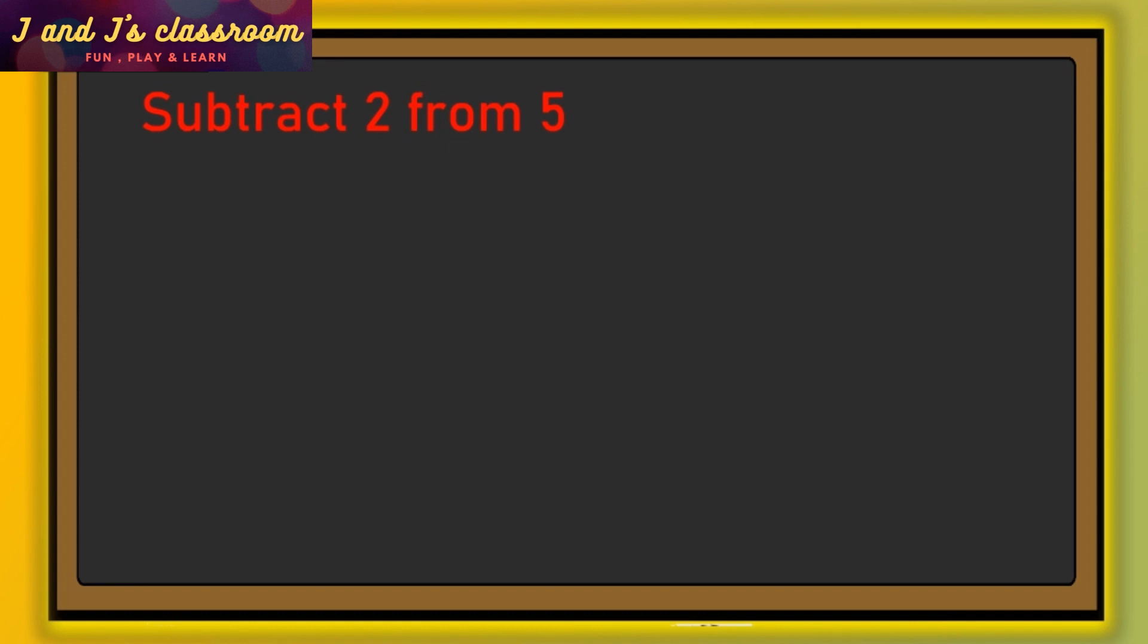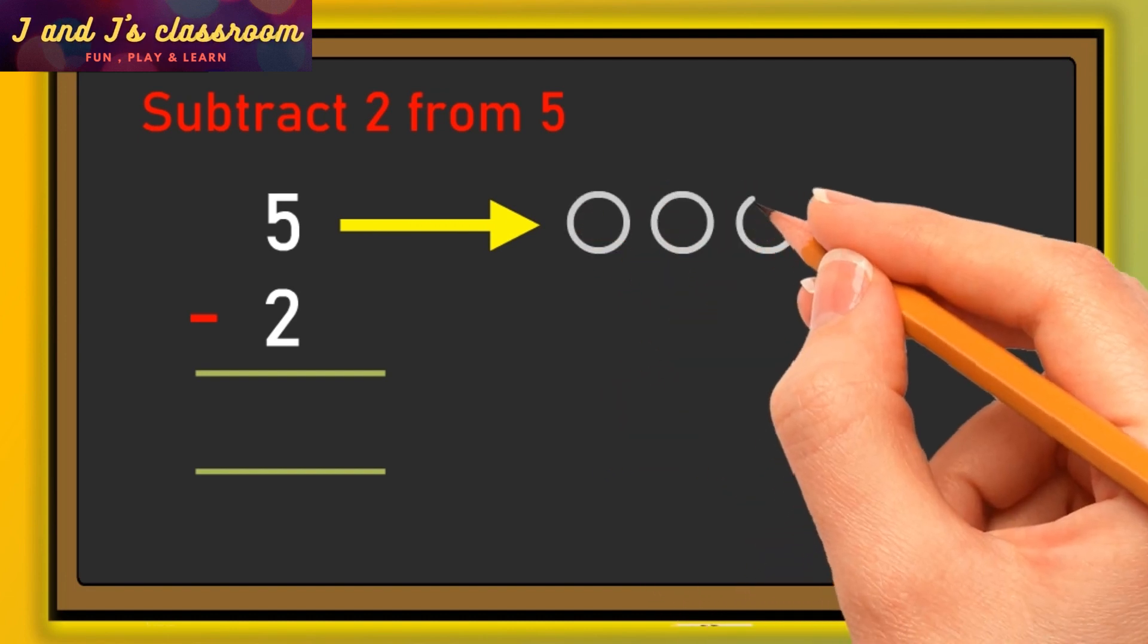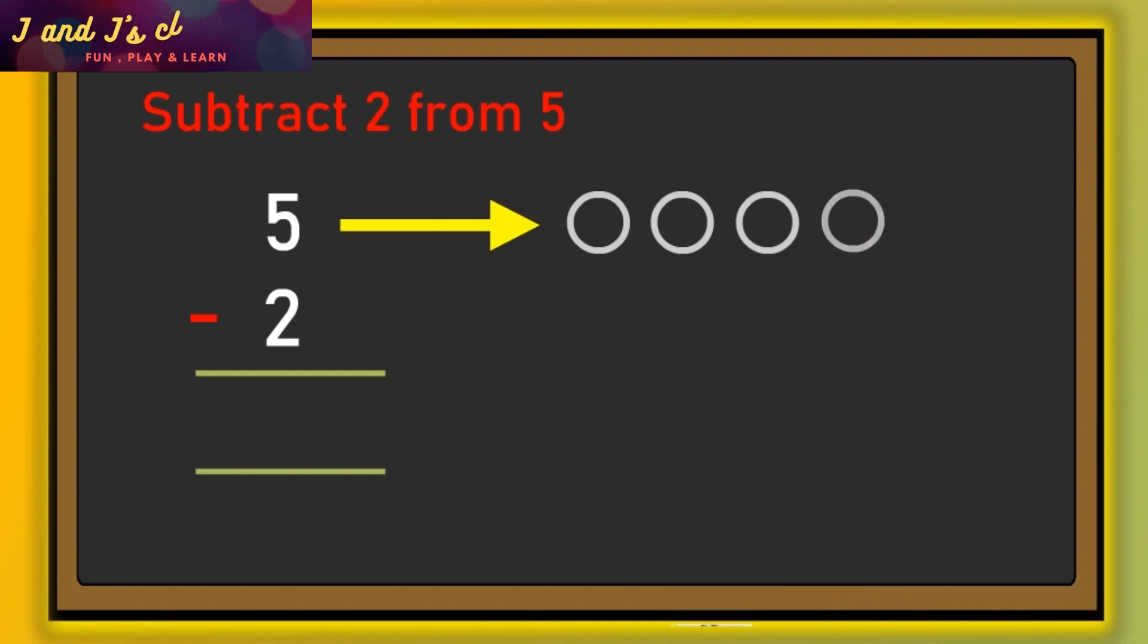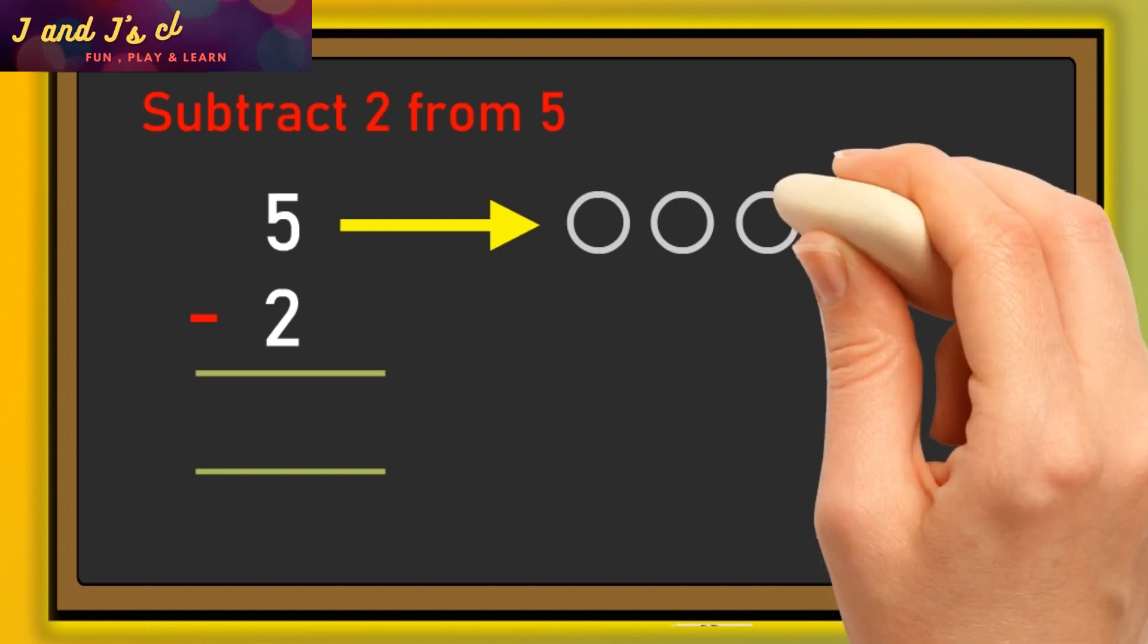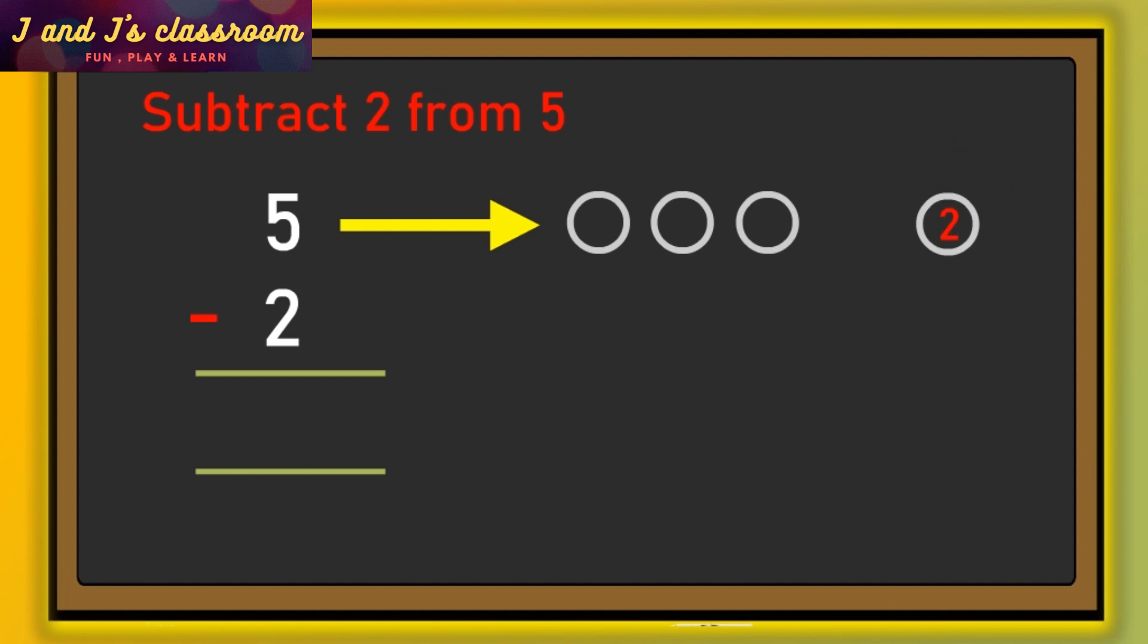First, we are going to subtract two from five. The big number is five, so write that first, then write the number two. Now let's start the subtraction. The first number is five, so draw five circles: one, two, three, four, five. And the second number is two, so write one, two on the circles. Now erase these two circles.